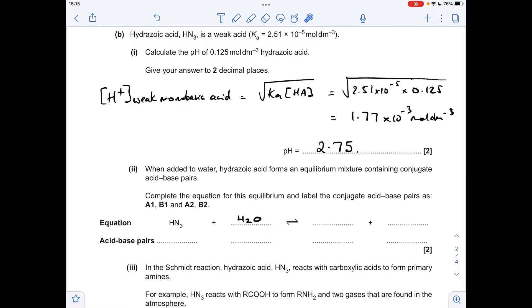For the equilibrium mixture equation, the HN3 donates that proton to the H2O, which generates the H3O plus ion and the N3 minus ion. H2O is acting as a base, so that's the base of pair 2. The H3O plus is the acid of pair 2, so A2. The N3 minus ion is the conjugate base of pair 1, so B1.